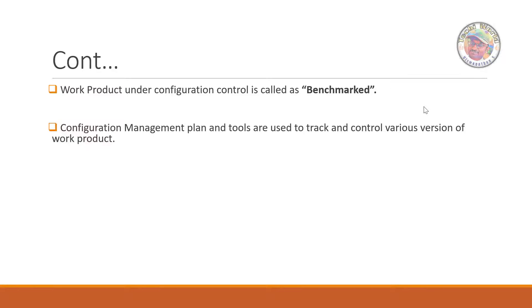Configuration management plan and tools are used to track and control various versions of the product. Certain plans are ready — for example, how do you apply that to the quality assurance plan? If you have a team, they have a quality assurance plan. You can use tools for the configuration management plan.